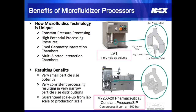This is a brief summary of the key features and benefits of our technology. The microfluidizer processor has constant pressure processing with potential processing pressure up to 30,000 psi. The core technology is the fixed geometry interaction chamber and multi-slotted interaction chambers are available for scaling up. These features result in a very small particle size potential, narrow particle size distribution, and we guarantee scale up from lab to production scale. The LV-1 processes one milliliter at a time, while the pharmaceutical grade M7250-20 generates the same results in a cGMP environment at 8 liters per minute.